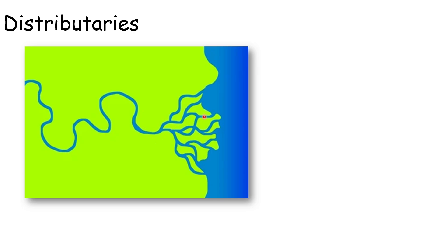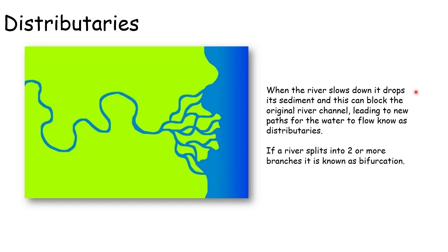A delta often splits into lots of little channels before it joins the sea. Here's the river flowing down towards the sea — this wedge of land is the delta, but you'll notice the water wandering across it in lots of different channels. When the river slows down, it drops its sediment, which can block the original river channel. This leads to new paths for the water to flow in, known as distributaries. If a river splits into two or more branches, it's known as bifurcation.